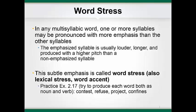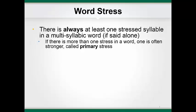Also, notice that the quality of the vowel sometimes changes when the vowel is stressed compared to when it is not stressed. For example, the 'pro' part is pronounced 'pra' in 'project' and 'pra' in 'project.' If a word is said in isolation or by itself, there is always at least one stressed syllable in a multisyllabic word. If the word has only one syllable, then that is the stressed syllable.